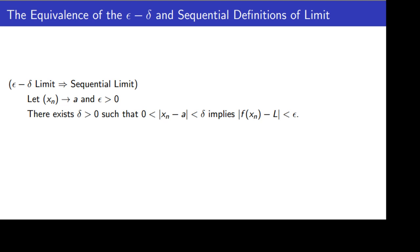So the next thing we do is we pick a delta such that if zero is less than the absolute value of x minus A is less than delta, then the absolute value of f of x minus L is less than epsilon. And then we'll plug in x sub n for x because the delta will work for all x's that are within a distance of delta from A, but we only care about the x's that are going to be elements of our sequence. So we'll substitute x sub n in for x in our equations.